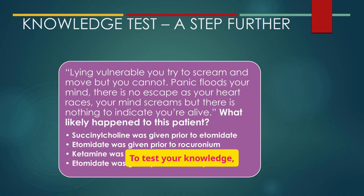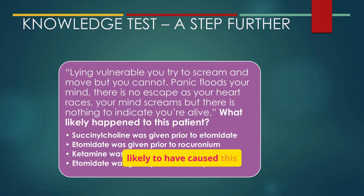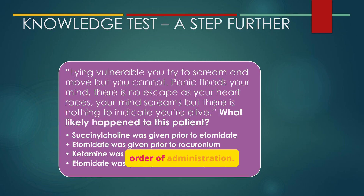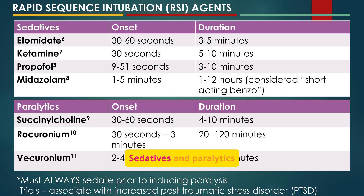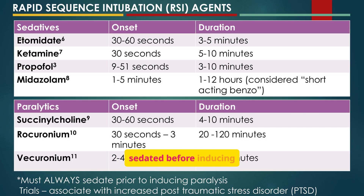Consider this scenario: a patient reports awareness during paralysis. Which medication sequence is most likely to have caused this experience? Think carefully about the order of administration. Sedatives and paralytics are essential components of RSI — patients must always be adequately sedated before inducing paralysis to prevent awareness.